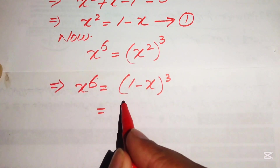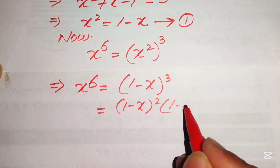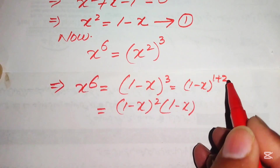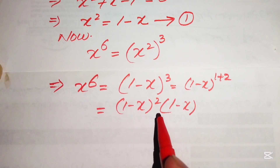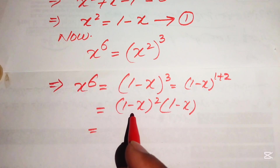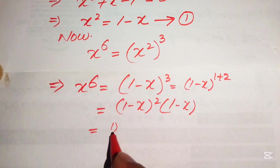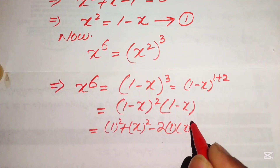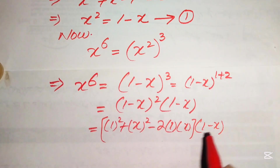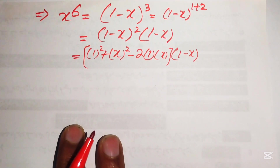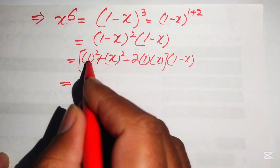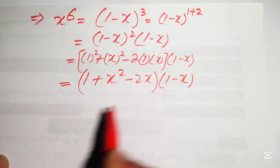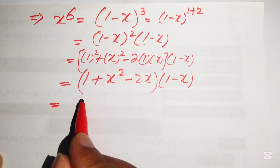We break (1 - x)³ as (1 - x)² times (1 - x), writing the exponent 3 as 1 plus 2. Applying the square identity (a - b)² = a² - 2ab + b² to the first factor gives 1² + x² - 2·1·x, which equals 1 + x² - 2x. So x⁶ equals (1 + x² - 2x) times (1 - x).